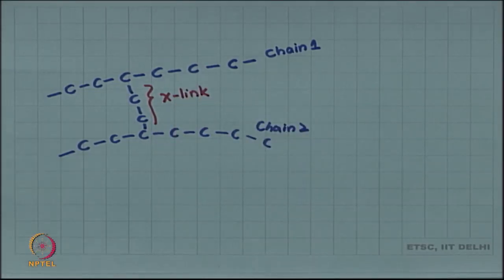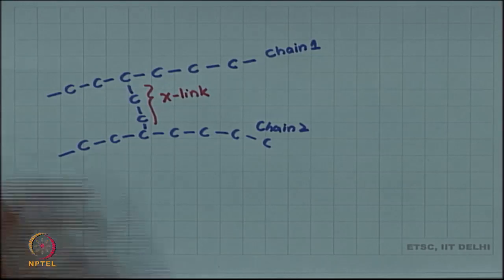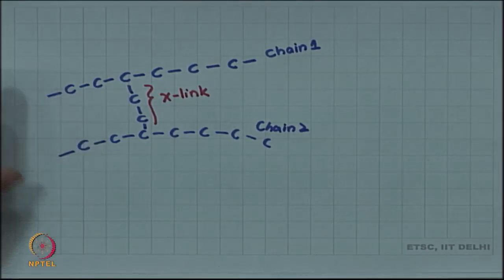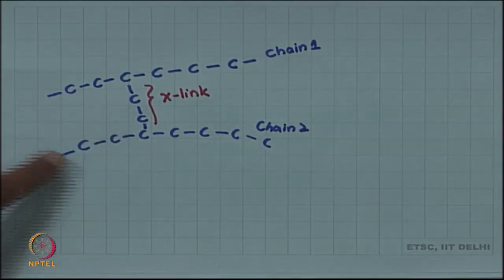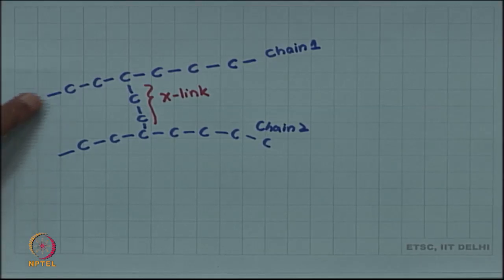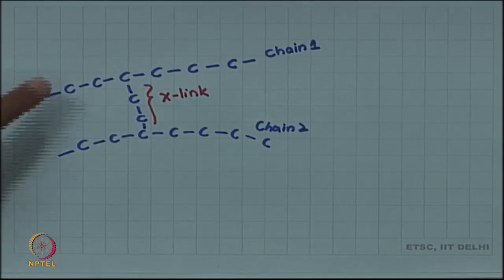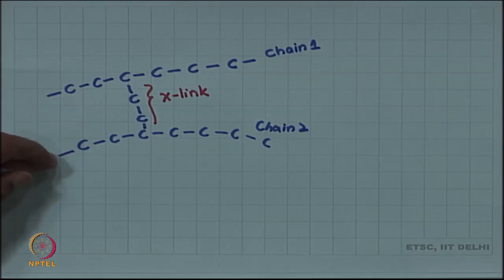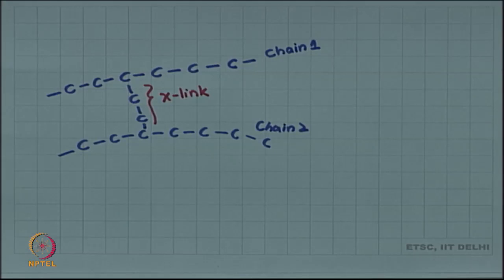You can see any such cross link will prevent the easy sliding of the two molecules, because if one molecule wants to slide the other molecule will hold it through the cross link. So, it is much more difficult to deform such cross linked polymers.